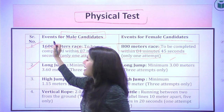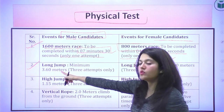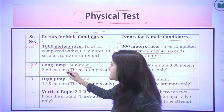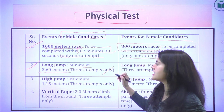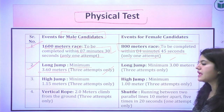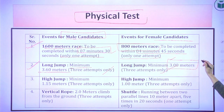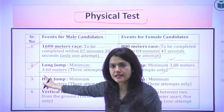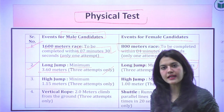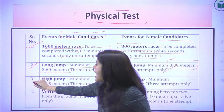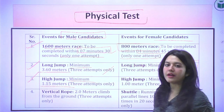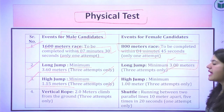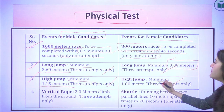For the long jump: men must achieve a minimum of 3.60 meters, with 3 attempts allowed. Women must achieve a minimum of 3 meters, also with 3 attempts. For the high jump: men must clear a minimum of 1.15 meters with 3 attempts, and women must clear a minimum of 1 meter.